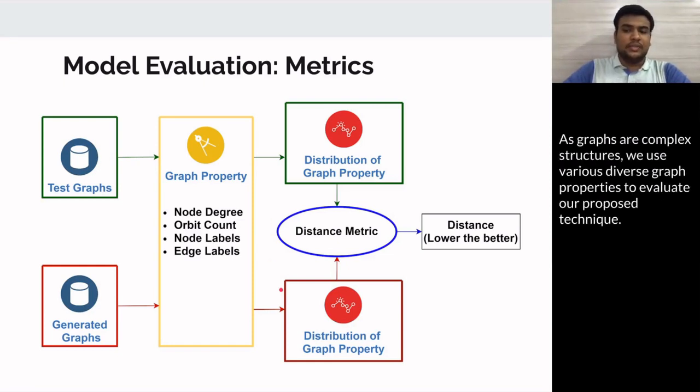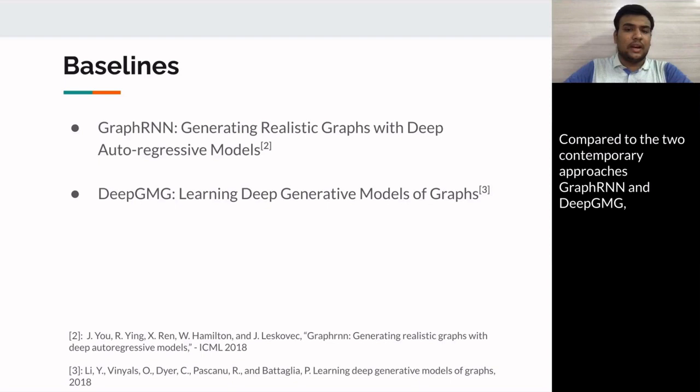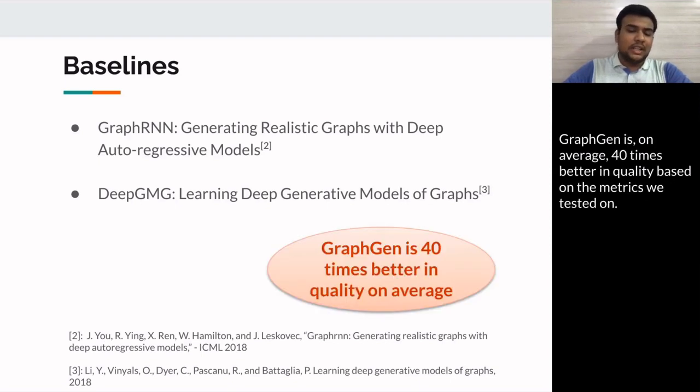As graphs are complex structures, we use various diverse graph properties to evaluate our proposed technique. Compared to the contemporary approaches GraphRNN and DeepGMG, GraphGen is on average 40 times better in quality based on the metrics we tested on.